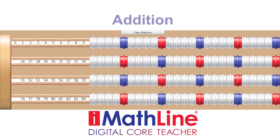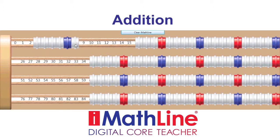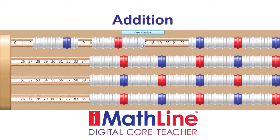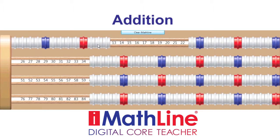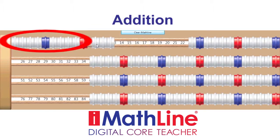Now let's do a simple addition. Take the problem six plus seven. The student will count one through six, and then seven more: one, two, three, four, five, six and seven. We see the problem six plus seven on our MathLine, and the student always adds them together. We see the sum thirteen, which is one ten and three ones.